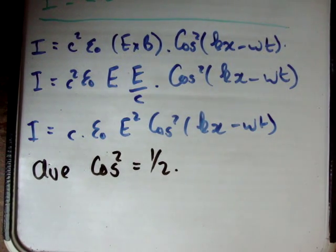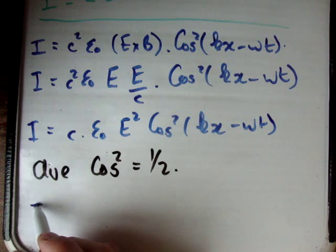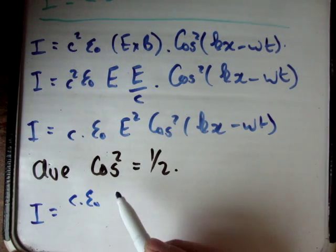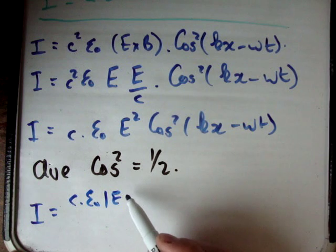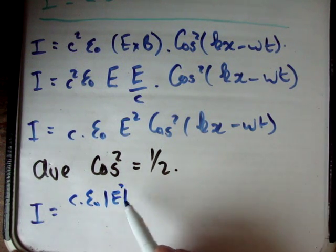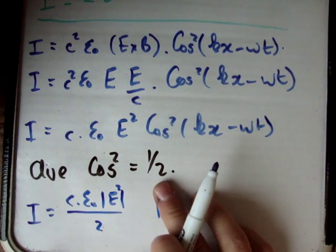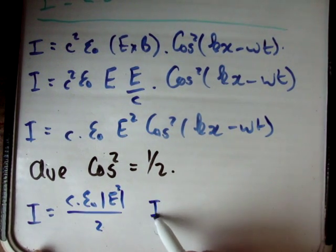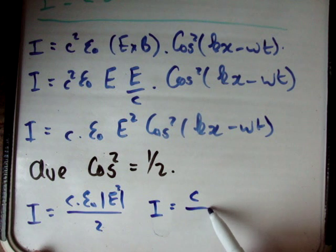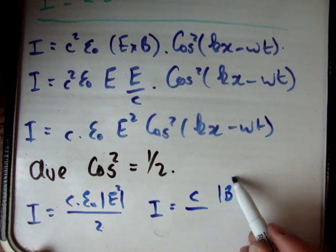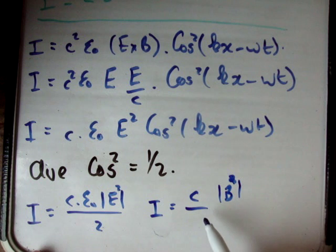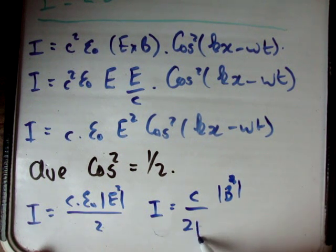And you'll find as a result of that, that the irradiance is equal to C times epsilon zero times the magnitude of the electric field squared over 2. And it's also equal to C times the magnitude of the magnetic field squared over 2 mu zero.